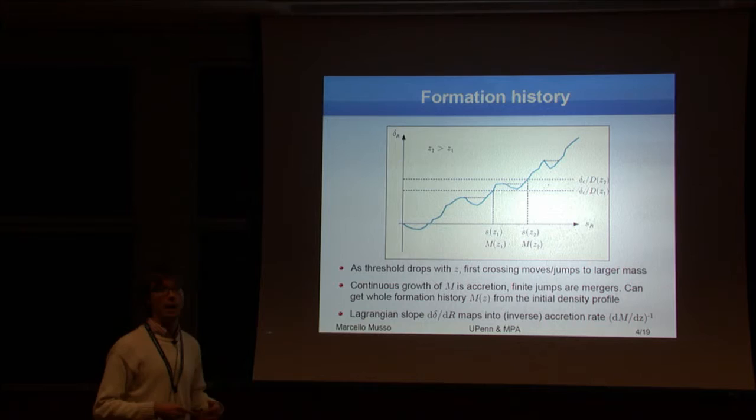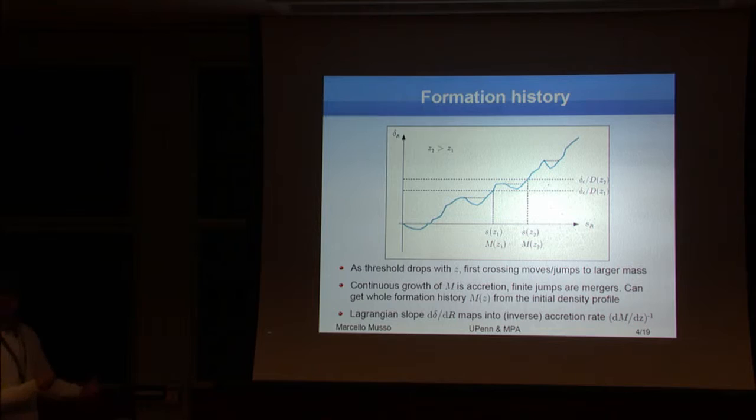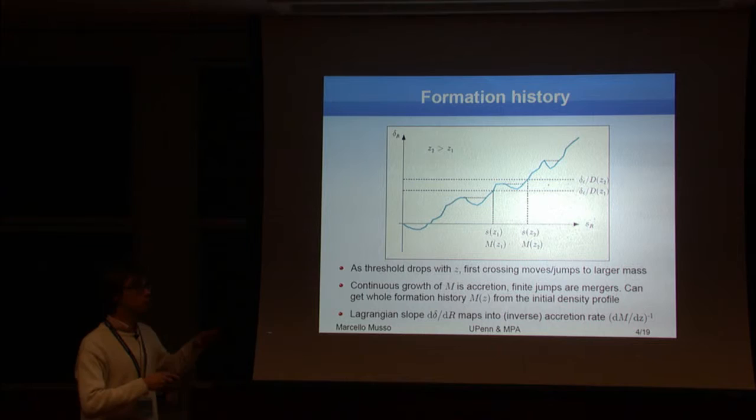Remember here, S is the variance, so large S means small mass and small s means large mass. So as you now change the height of the threshold, because you let your universe evolve, so you go to a smaller redshift, then the threshold drops, and therefore the first crossing scale moves to the right, towards larger masses.